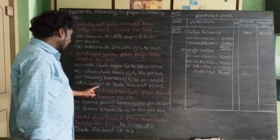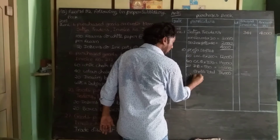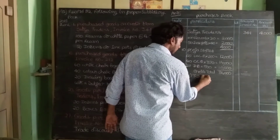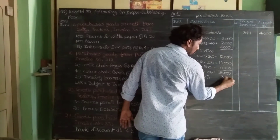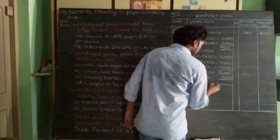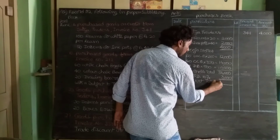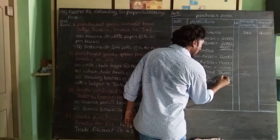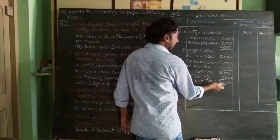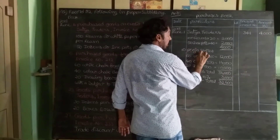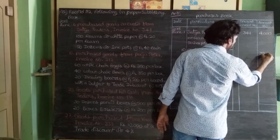Subject to trade discount of 10%. Minus trade discount: 10% of ₹36,000 = ₹3,600. The balance is the net total. The net amount to be recorded opposite Pooja Stores in the amount column is ₹32,400.